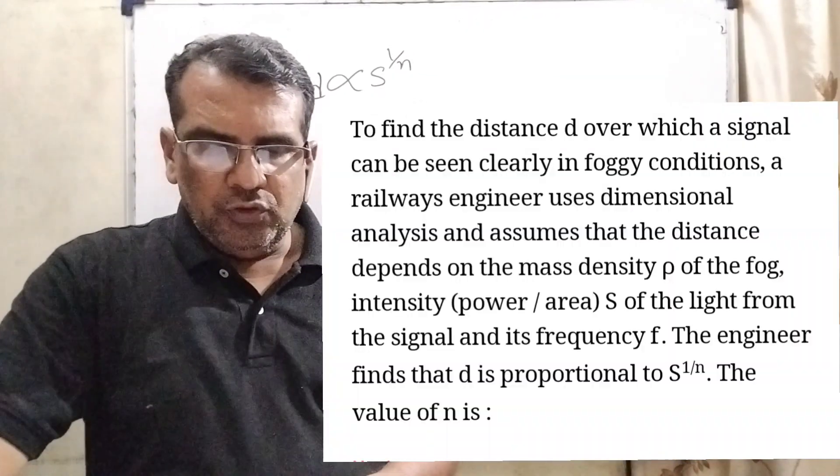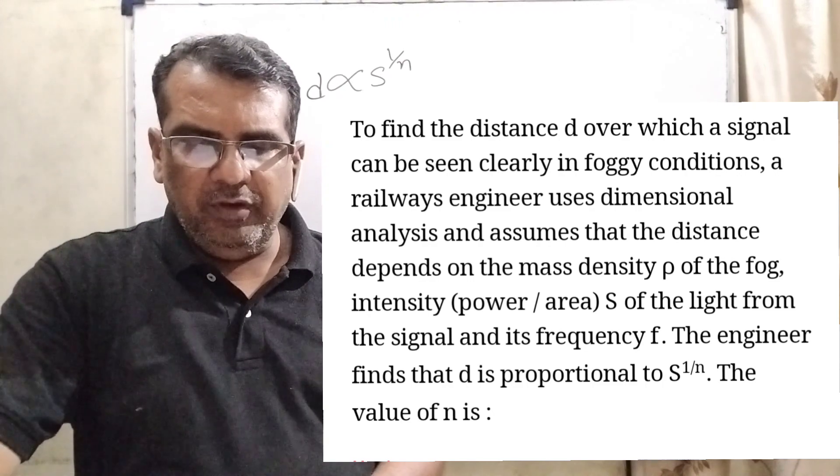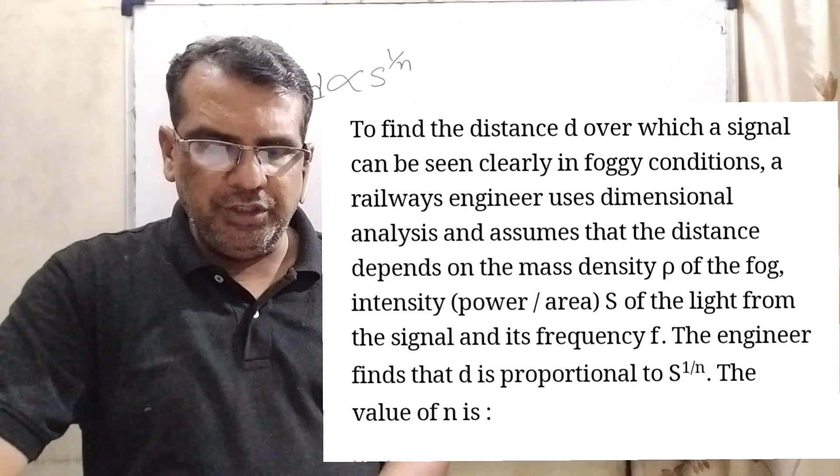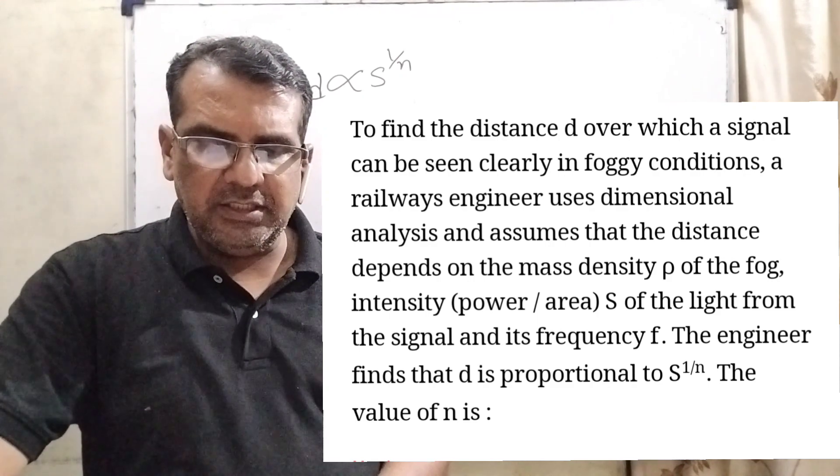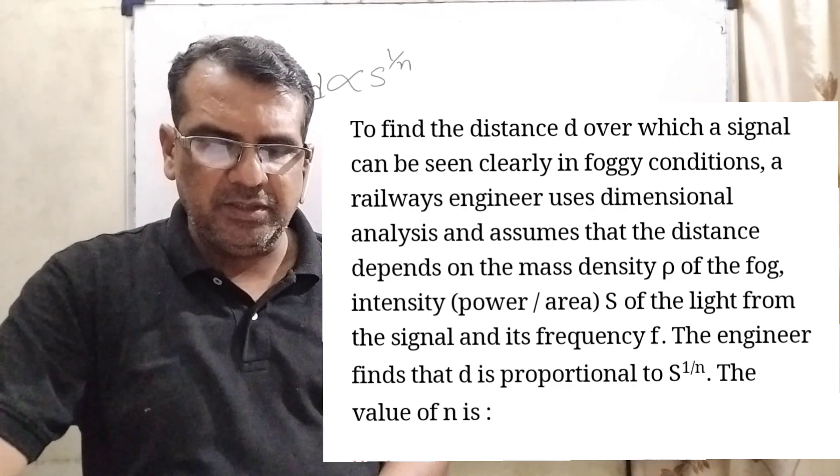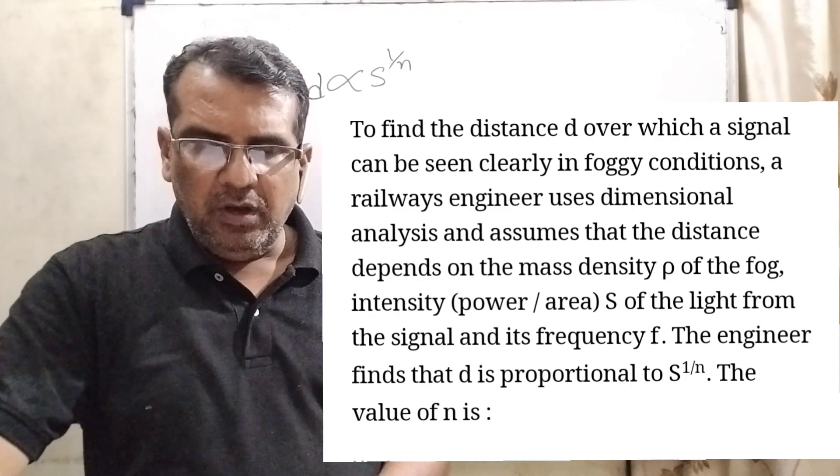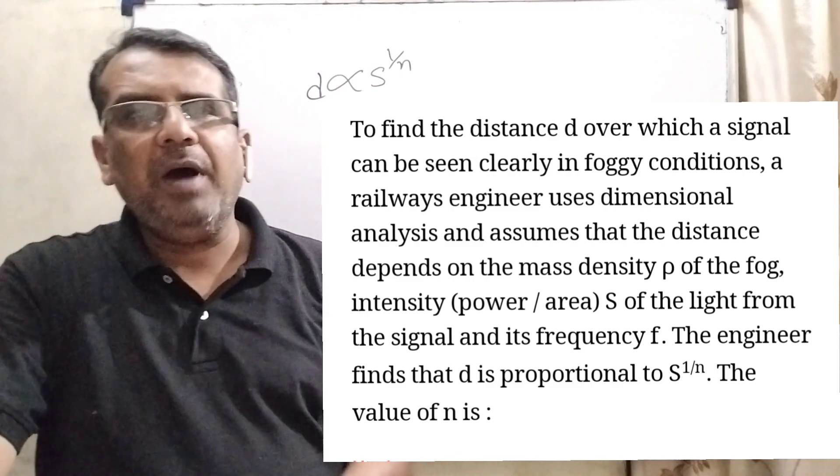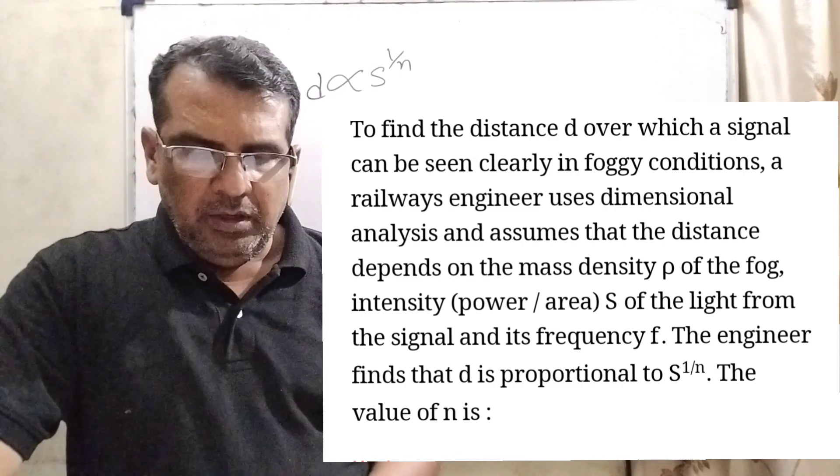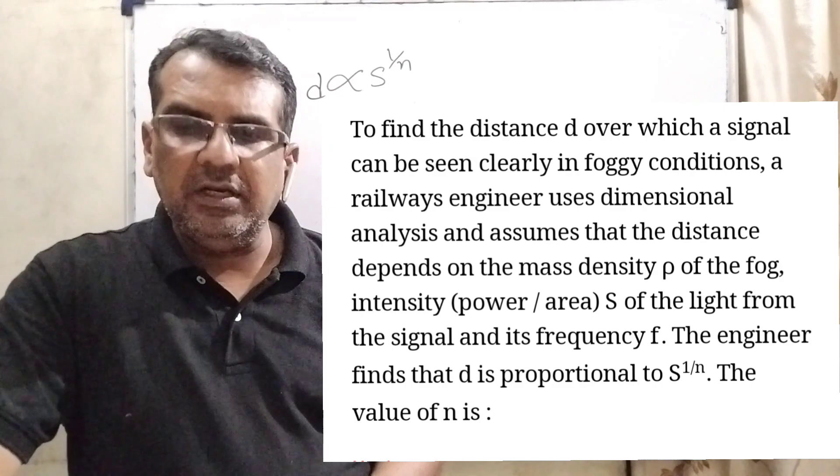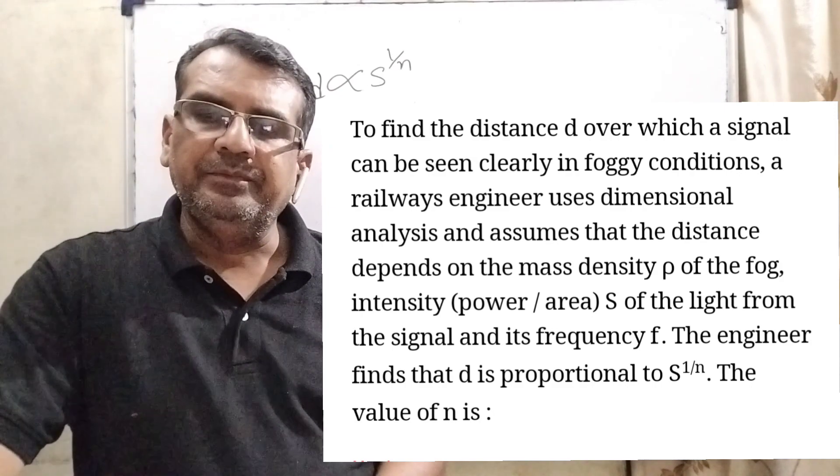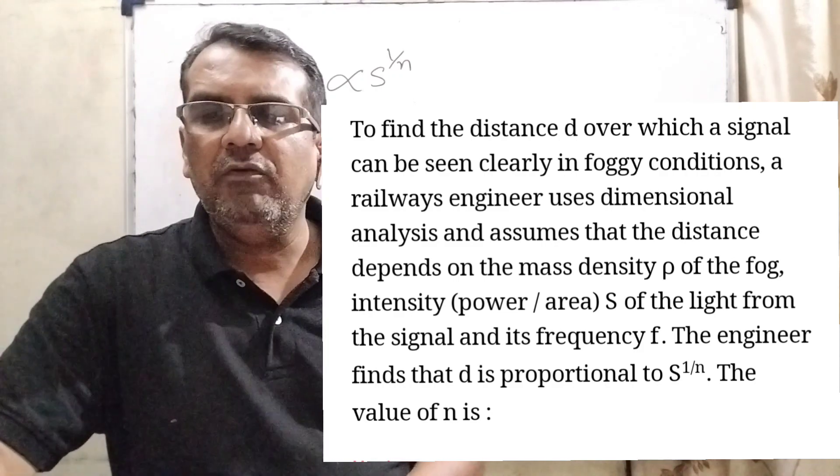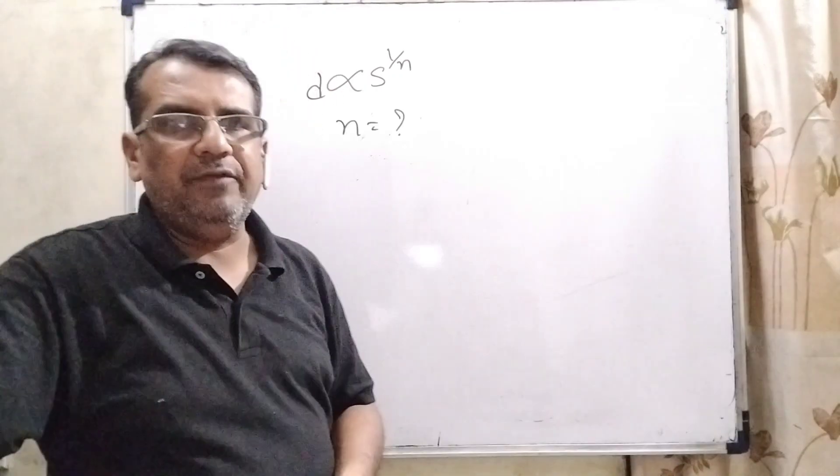The question is here. To find the distance d over which a signal can be seen clearly in foggy conditions, a railway engineer uses dimensional analysis and assumes that the distance depends on the mass density ρ of the fog, intensity (power per area) denoted by capital S of the light from the signal, and the frequency f. The engineer finds that d is proportional to S raised to power 1/n. Here we have to find the value of n.